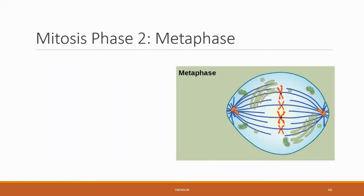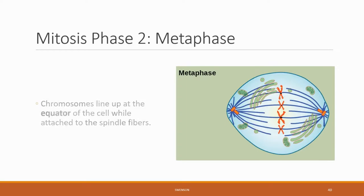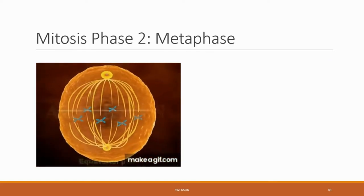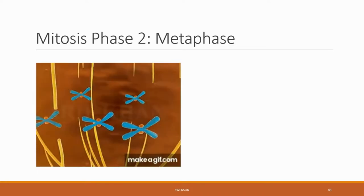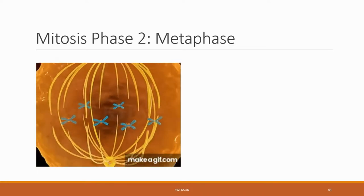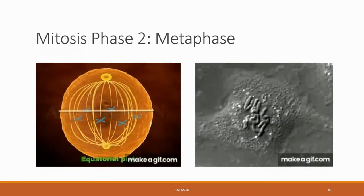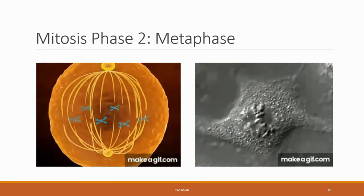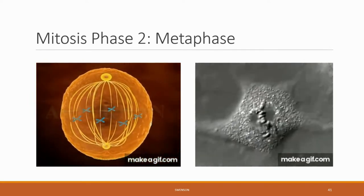In mitosis phase two, metaphase, the chromosomes change their position and line up at the equator of the cell while attached to the spindle fibers. The spindle fibers are going to direct the chromosomes where to go — first lining them up at the equator. Here we see an animation demonstrating that process, showing the lining up of the sister chromatids along the equator of the cell with the spindle fibers reaching out and attaching to the kinetochores.